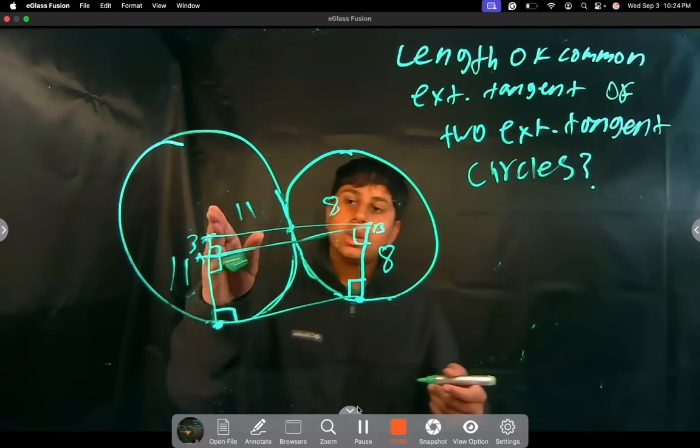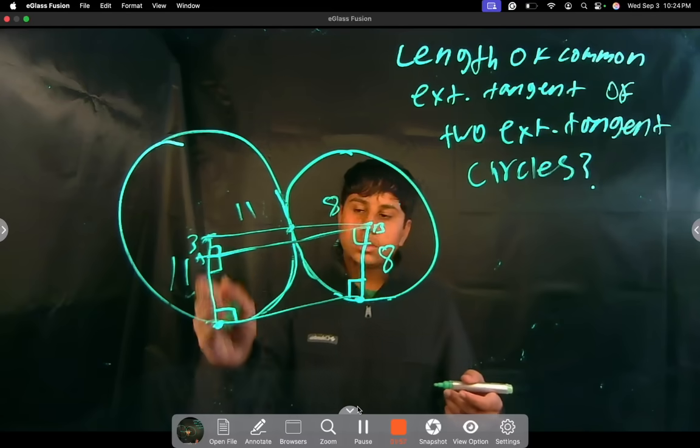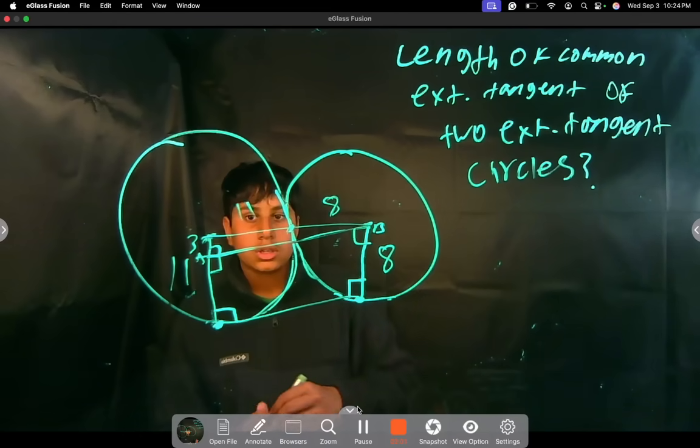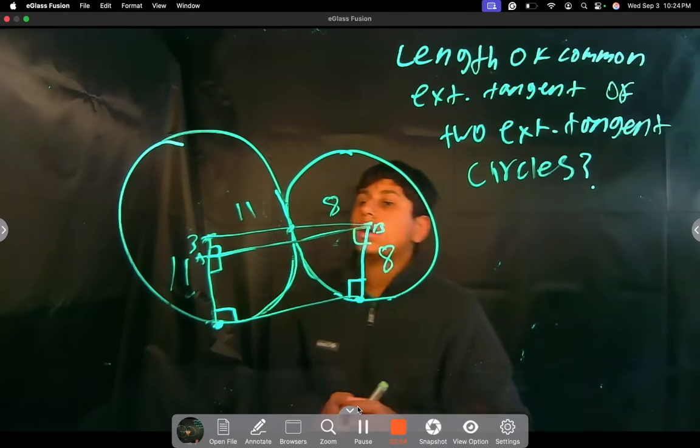And the hypotenuse of this right angle triangle has to be a right angle because this is a straight line from this radius. We know that all straight lines are 180 degrees, and since this is 90 degrees, that also has to be 90 degrees. So it's a right angle.